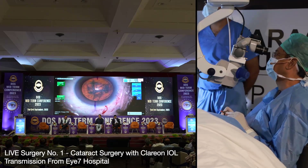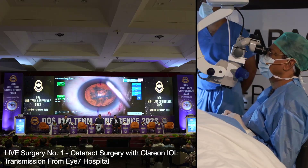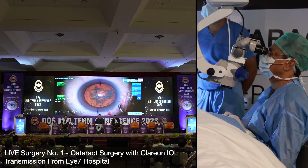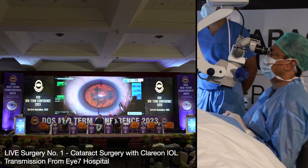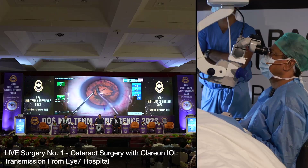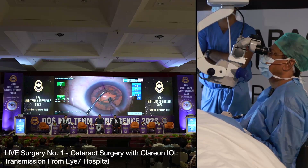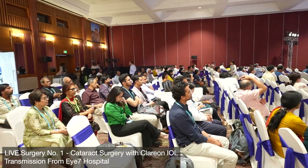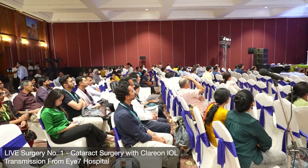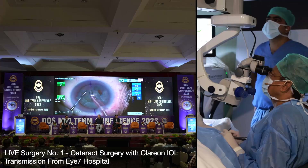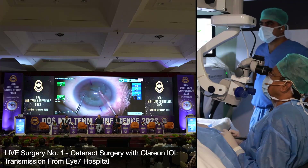I am also using the special tip called the balance tip, which is a little different from the Kelman tip. Just removing some soft tissue here. And now we are ready for the chop. We separate it out, and the moment I activate the torsional, you see the way the nuclear piece disappears.